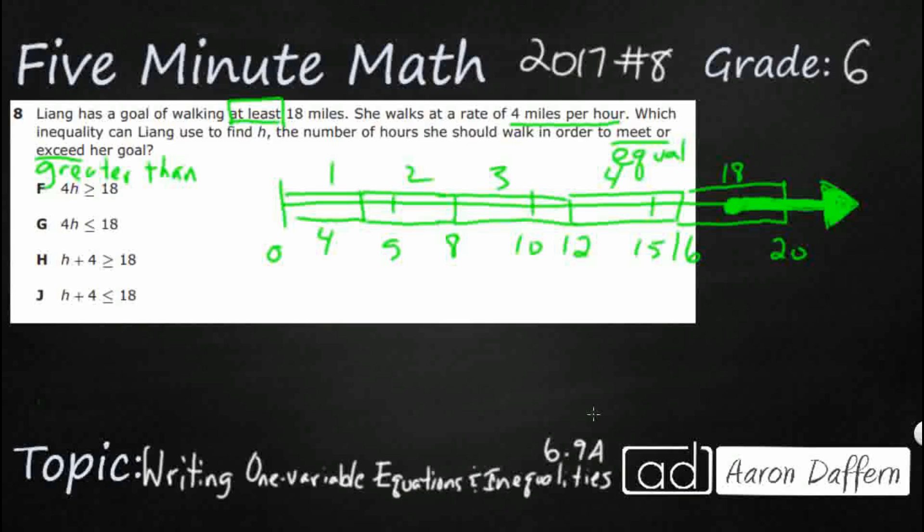Now how do we turn that into an inequality? Well, what we can do to figure out exactly what she needs is we can turn it into an inequality by writing this as an equation. Pulling this off of our number line, writing this as an equation.